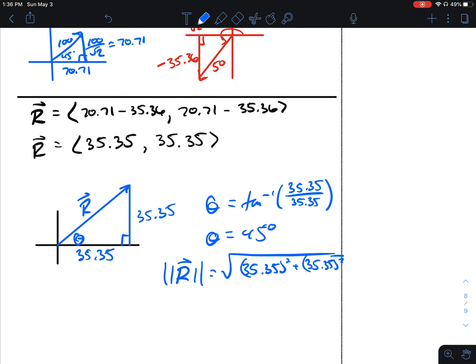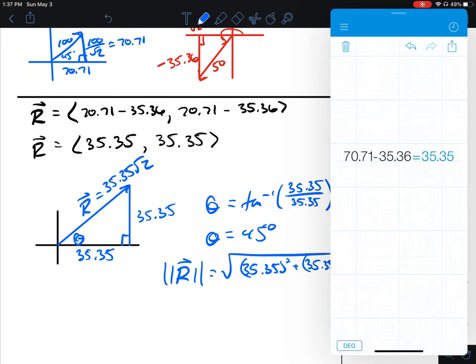Or simpler, since we know this is a 45, 45, 90, this is going to be 35.35 times the square root of 2. And that is about 49.99, almost 50.